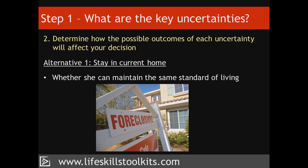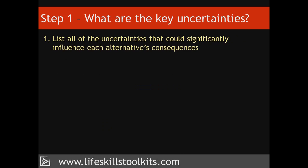Her third uncertainty – not knowing whether she would be able to maintain the same standard of living if she remained in the same house – causes Franny significant concern because of what could happen if she couldn't pay her bills and the mortgage. This is an uncertainty she will have to investigate further. Franny now turns her attention to her second alternative, downsizing to a smaller home, and identifies those uncertainties that could influence its significance.